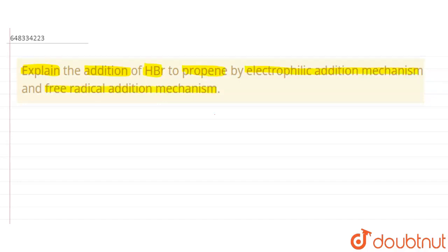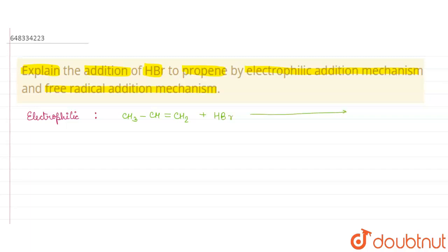First, if we look at the electrophilic addition, in this process we need to write the structure of propene: CH₃CH=CH₂. Now we need to add HBr, so this will follow Markovnikov's rule.